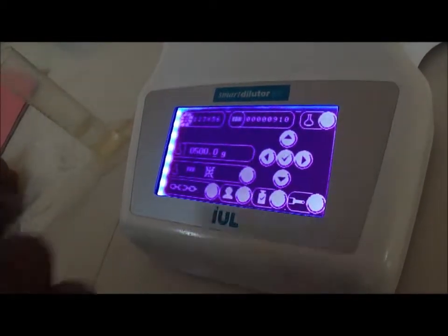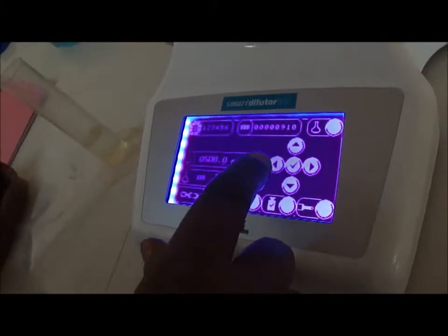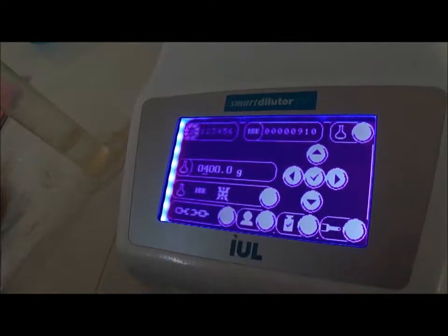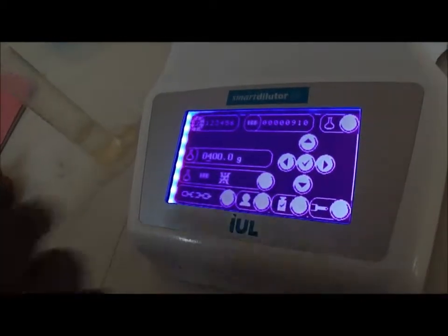This is changed here. If you make V here, then you can change it. For example, this was 500. I can take 400. And then I click OK.